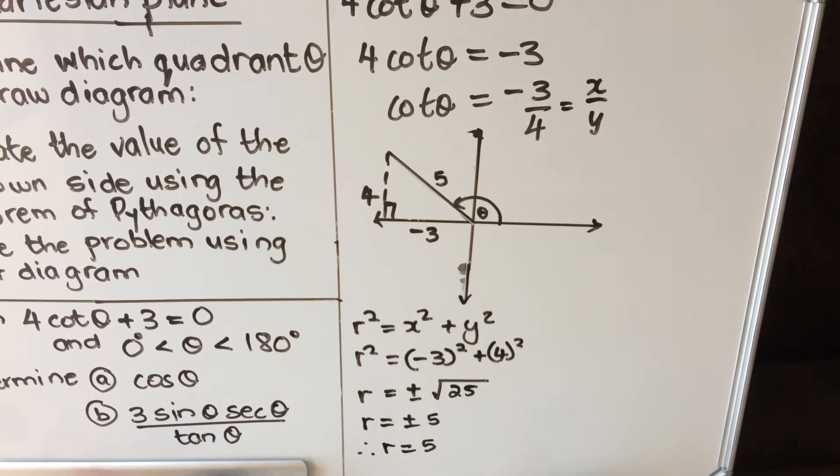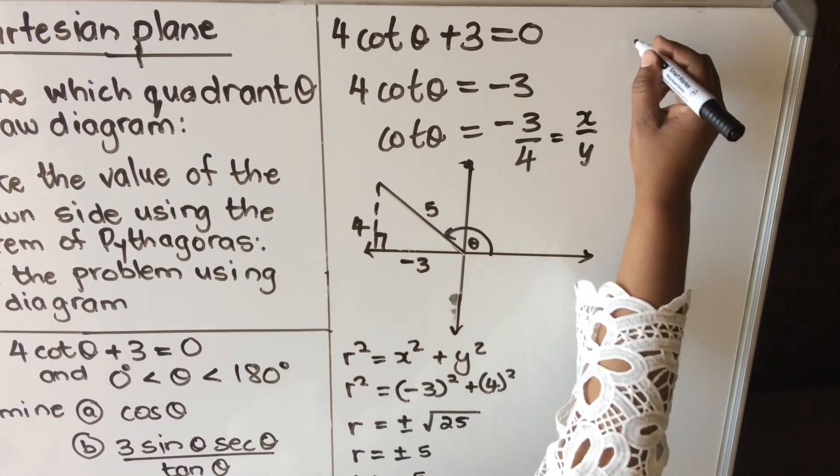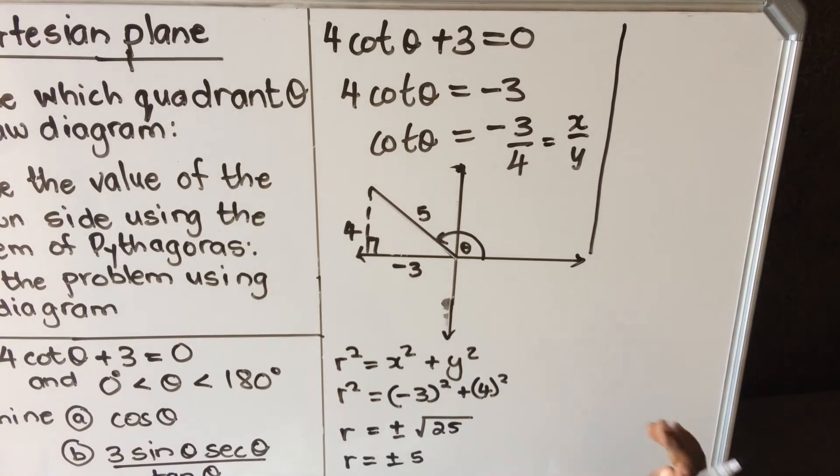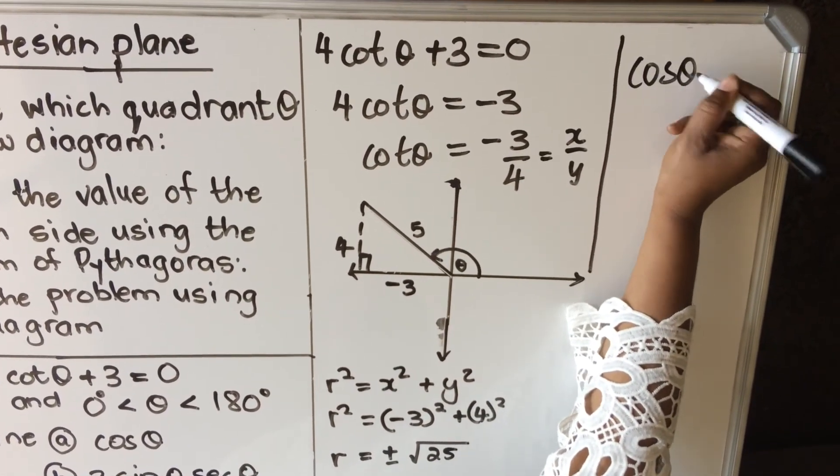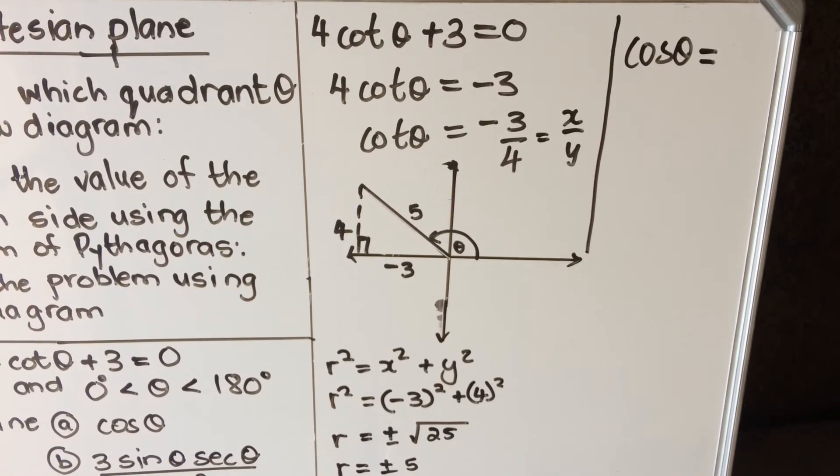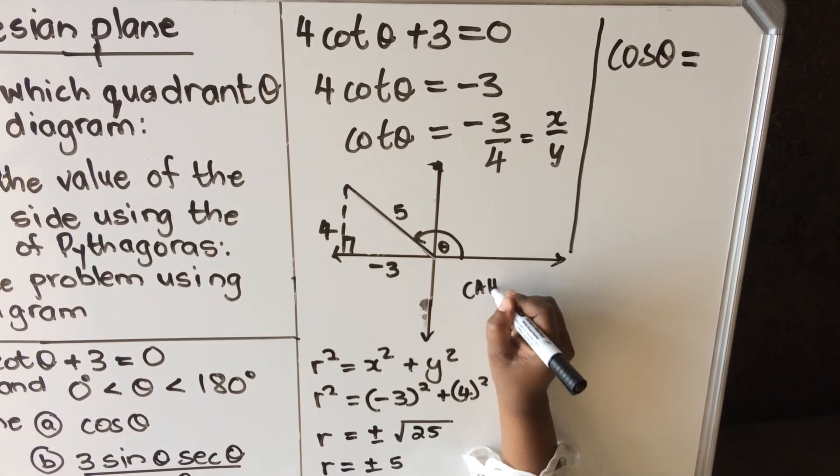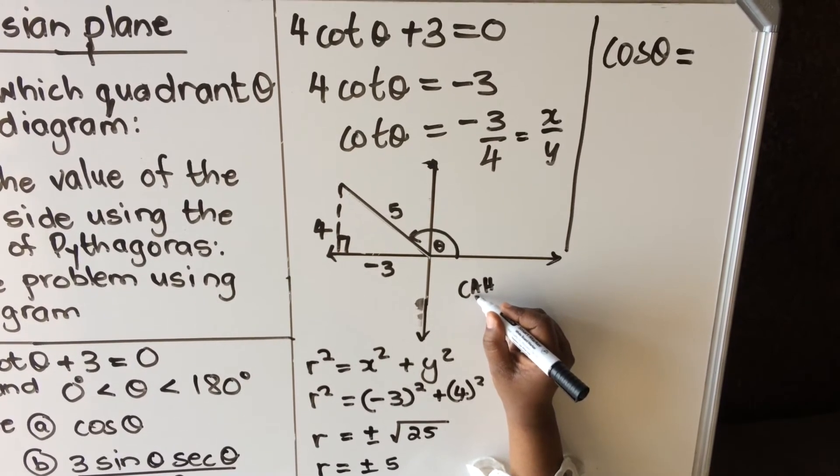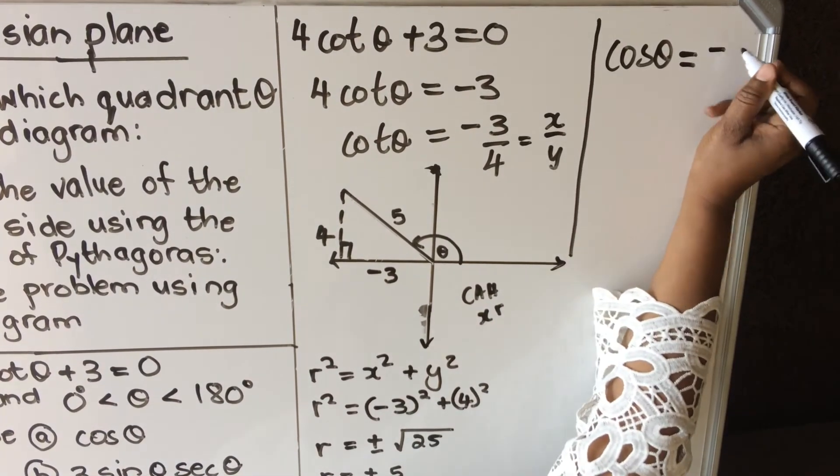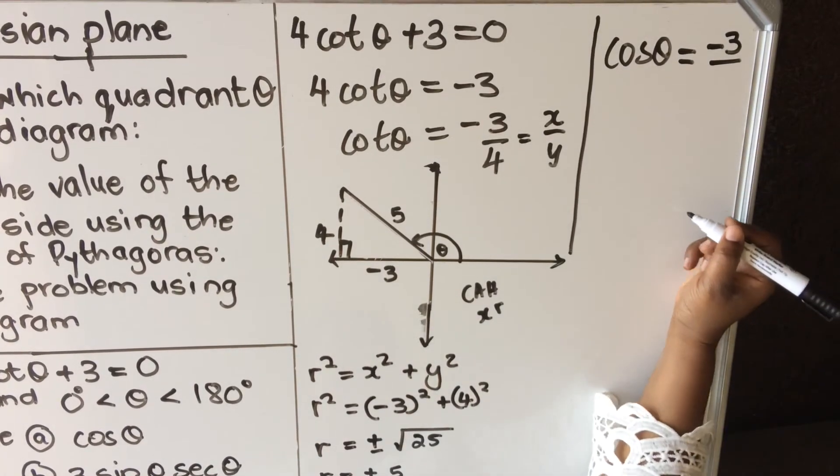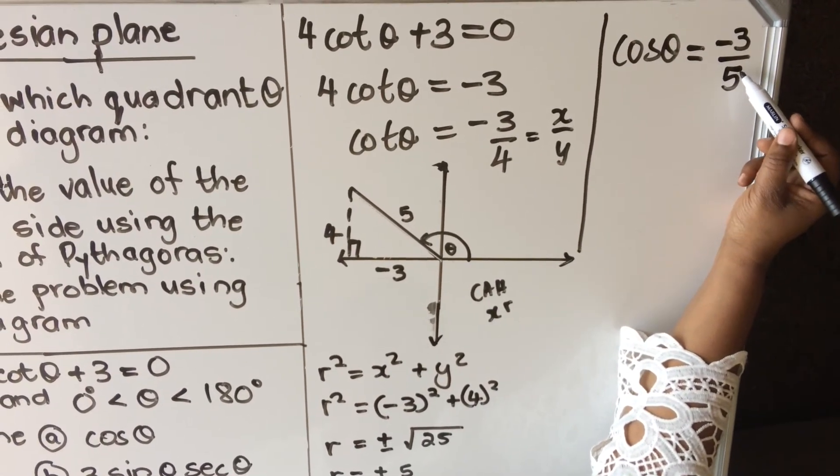After getting your r, go to the diagram and put that your r is 5. Then now we can start doing the questions. I'm going to do the questions here so that I have my diagram. The first one, I'm asked cos theta. What is my cos theta? Cos is adjacent over hypotenuse, which is x over r. So what is my x? My x is minus 3 and my r is 5. This is your answer: minus 3 over 5. You don't calculate theta, this is it.